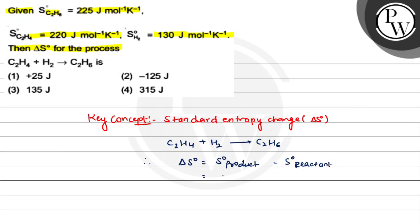This becomes ΔS° = S°(C₂H₆) - [S°(C₂H₄) + S°(H₂)]. All these values are given in the question. Put the values: the value here is 225.